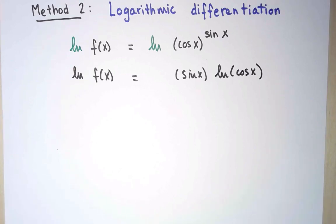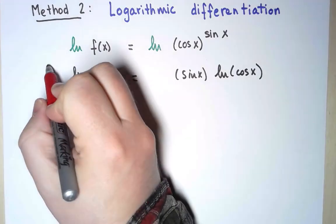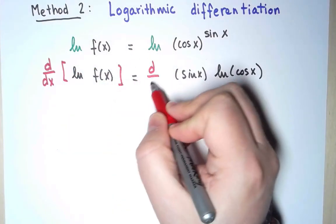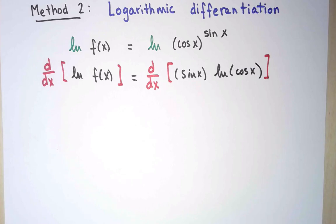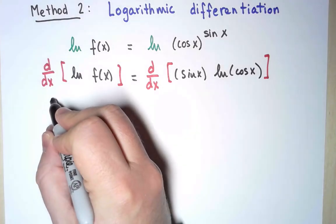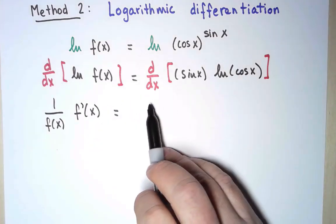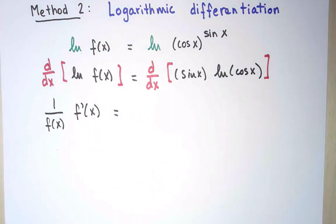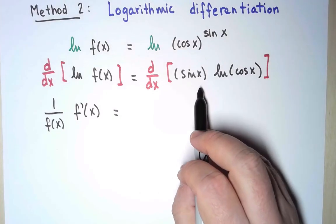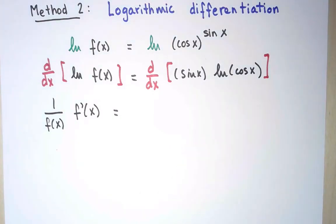On the left-hand side, I no longer have just f. I have ln f, but I can take the derivative using implicit differentiation. And on the right-hand side, I have to take the derivative of this product, so just use product rule. If this feels familiar, it's not an accident. It's exactly the same derivative I computed in method 1.